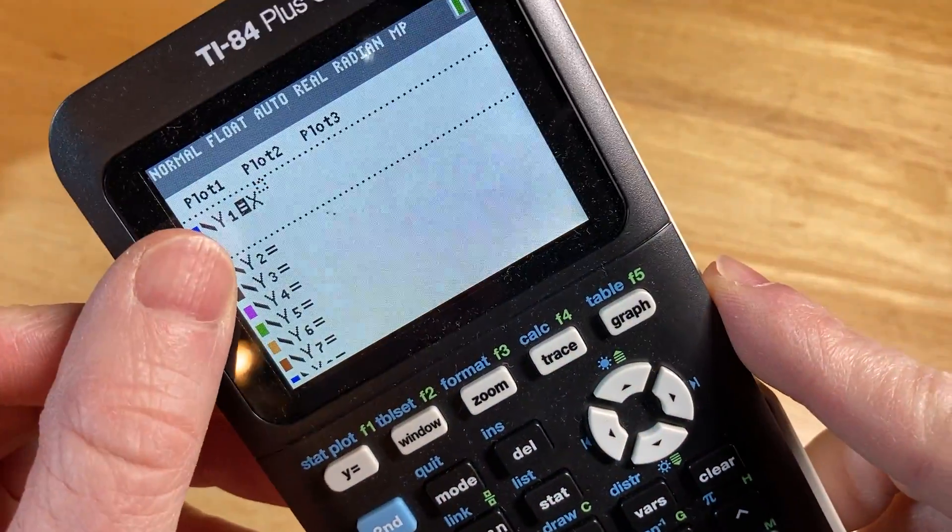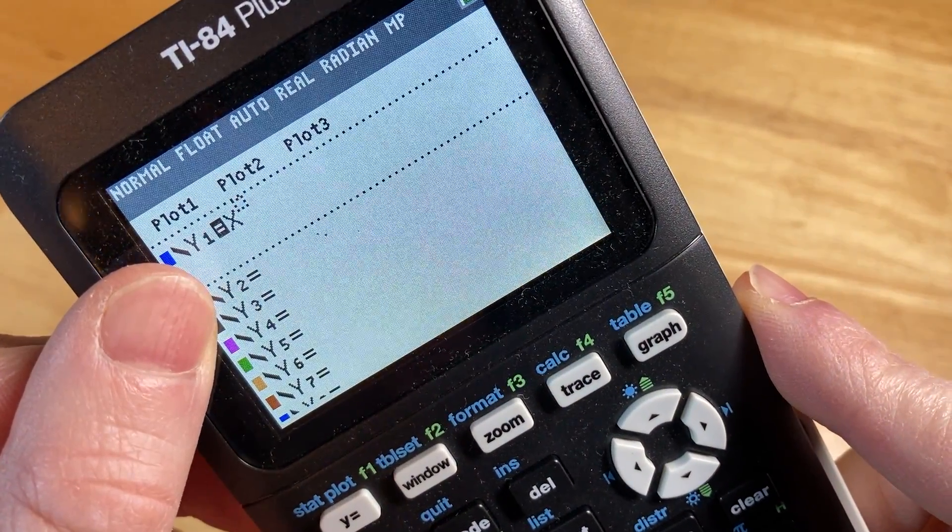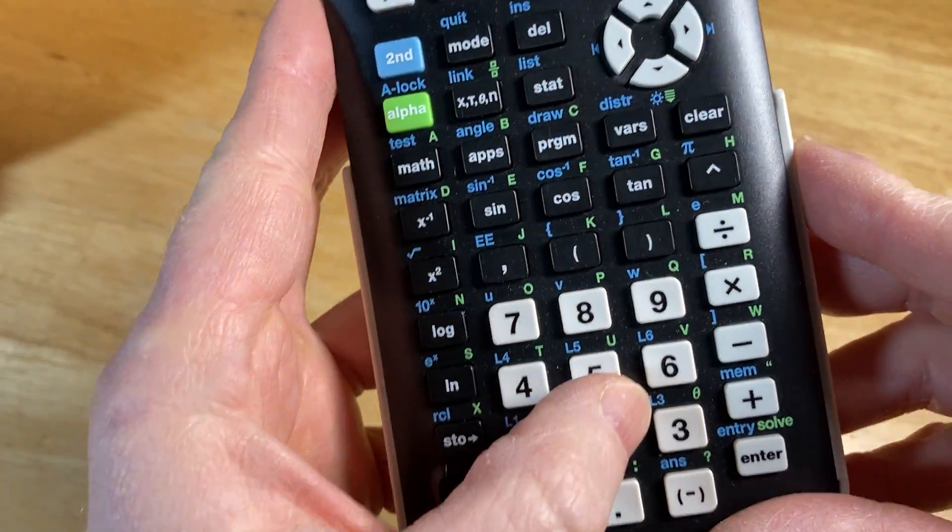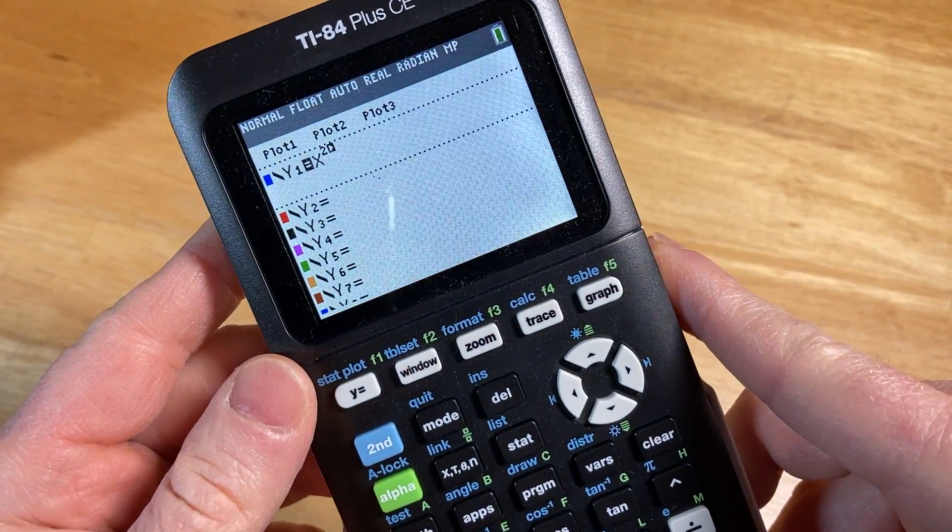And notice that takes us to the exponent, so you see how it's flashing there? So we need the number 2, so I'm going to press 2, and that's going to give us x squared.